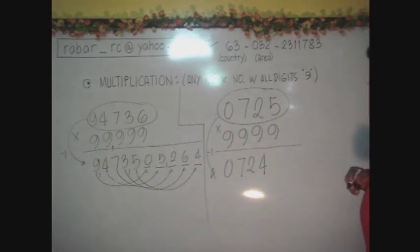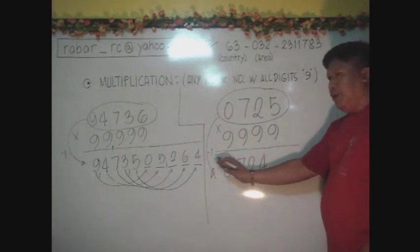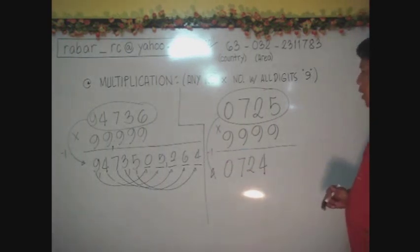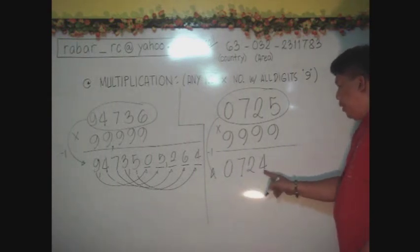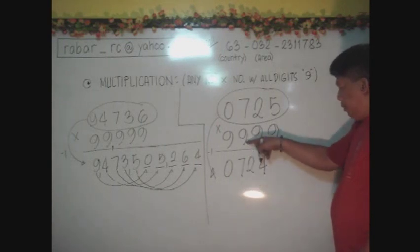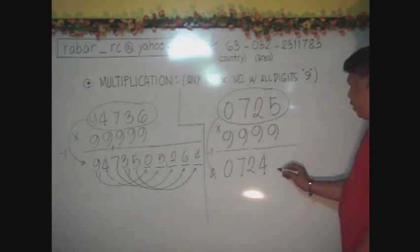That will give you a 0, 7, 2, 4. I include 0 because this is very important. If you don't include 0, we can have the wrong answer here. Then, in the sense that there are 4 digits here including 0, you can check it from the number of digits in our multiplier here. So you need actually 4.